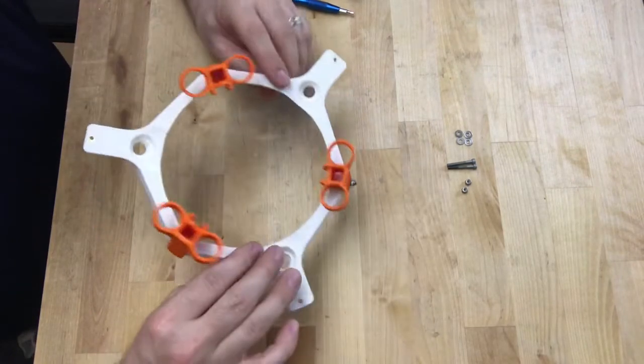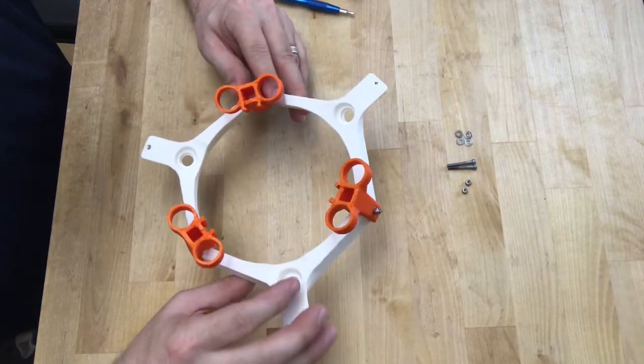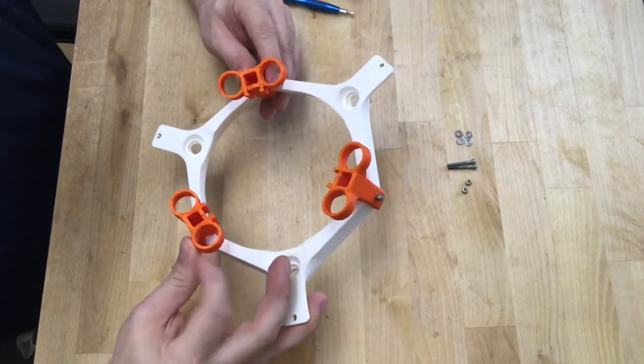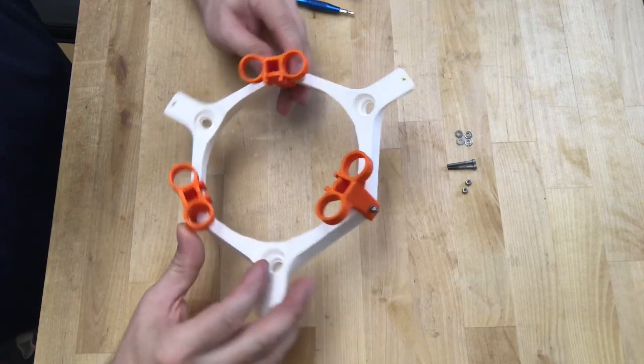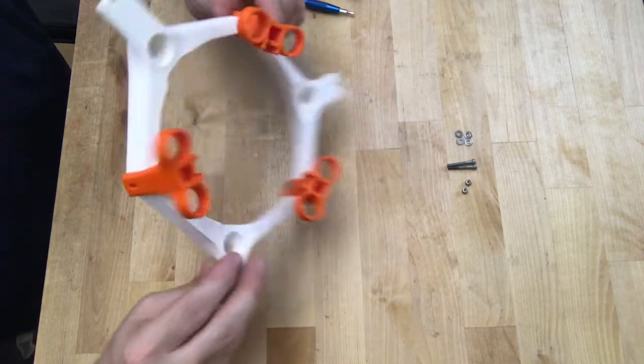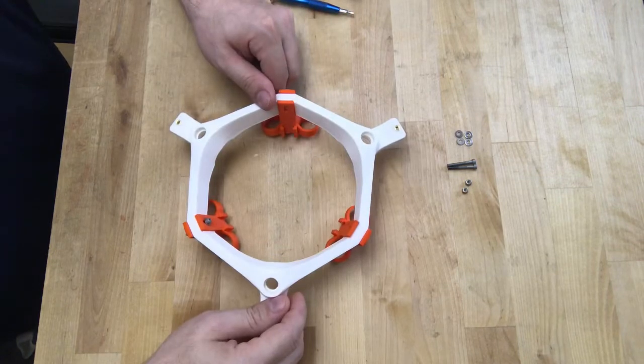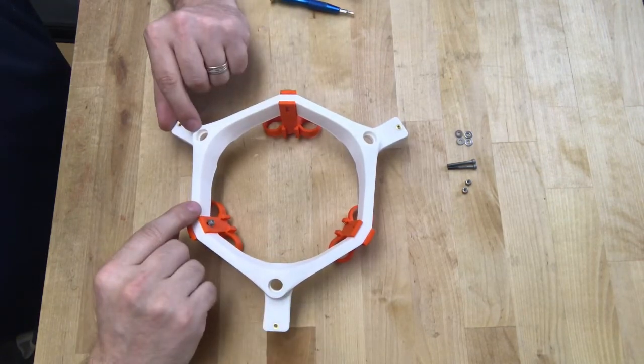So when you go to adjust one, make sure you adjust the other two. One of the things I didn't do, as you can tell, is I didn't put the magnets in and I really just wanted to do that for this video. We'll do something separately for the magnets later on when we finish. Next step, let's get the bearings in place.